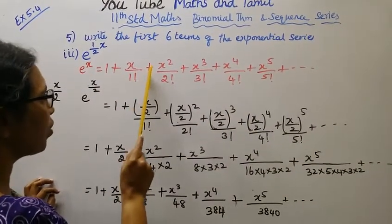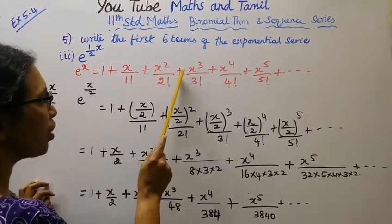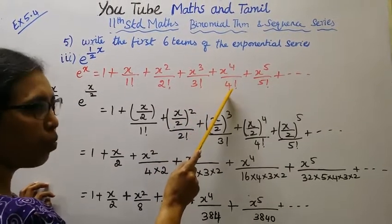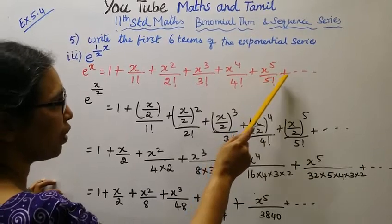e power x equals 1 plus x by 1 factorial, plus x square by 2 factorial, plus x power 3 by 3 factorial, plus x power 4 by 4 factorial, plus x power 5 by 5 factorial.